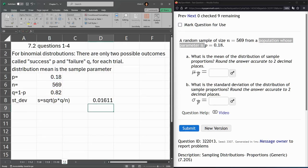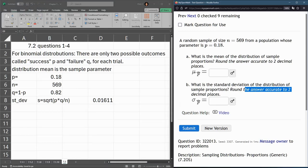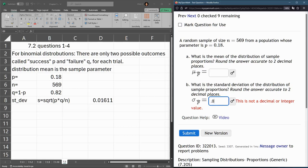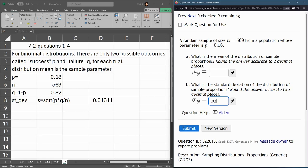And we do want to round as the problem's asking. So this one, 0.02, barely, but still.